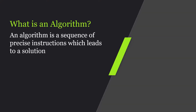Let's start out by defining what an algorithm is. An algorithm is a sequence of precise instructions which leads to a solution. There are two key things to point out here. First is sequence — this implies that there is an ordering to the instructions. The other is precise instructions. The computer is only going to do exactly what you tell it to do. It won't make any assumptions or fill in any gaps from A to B.